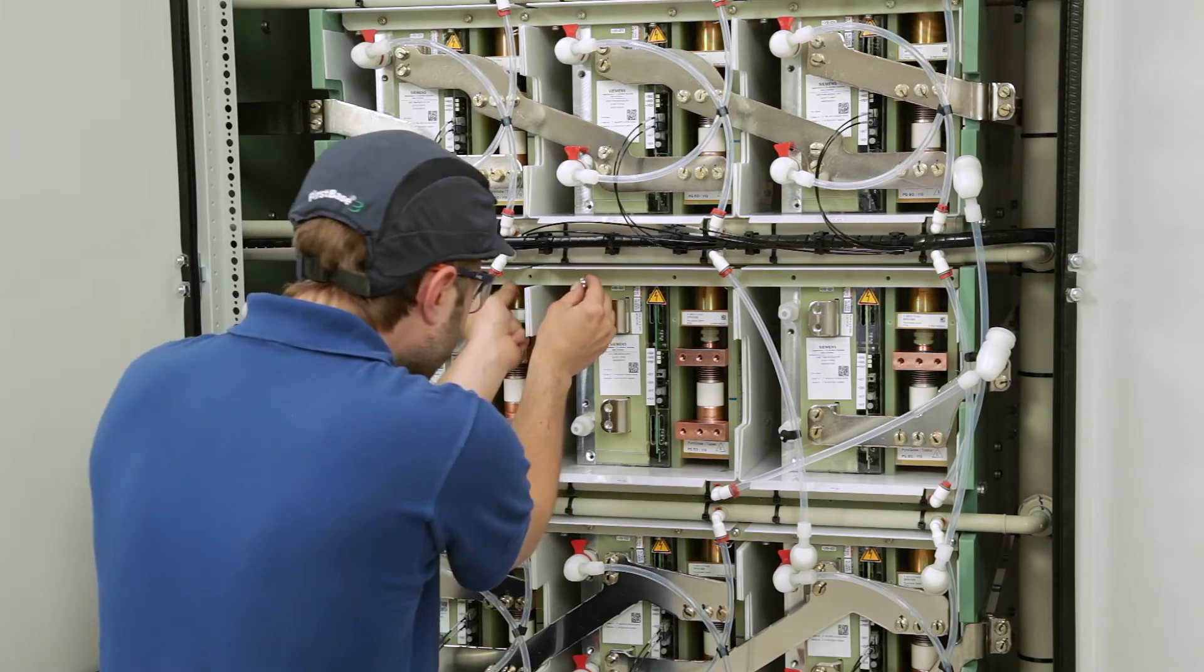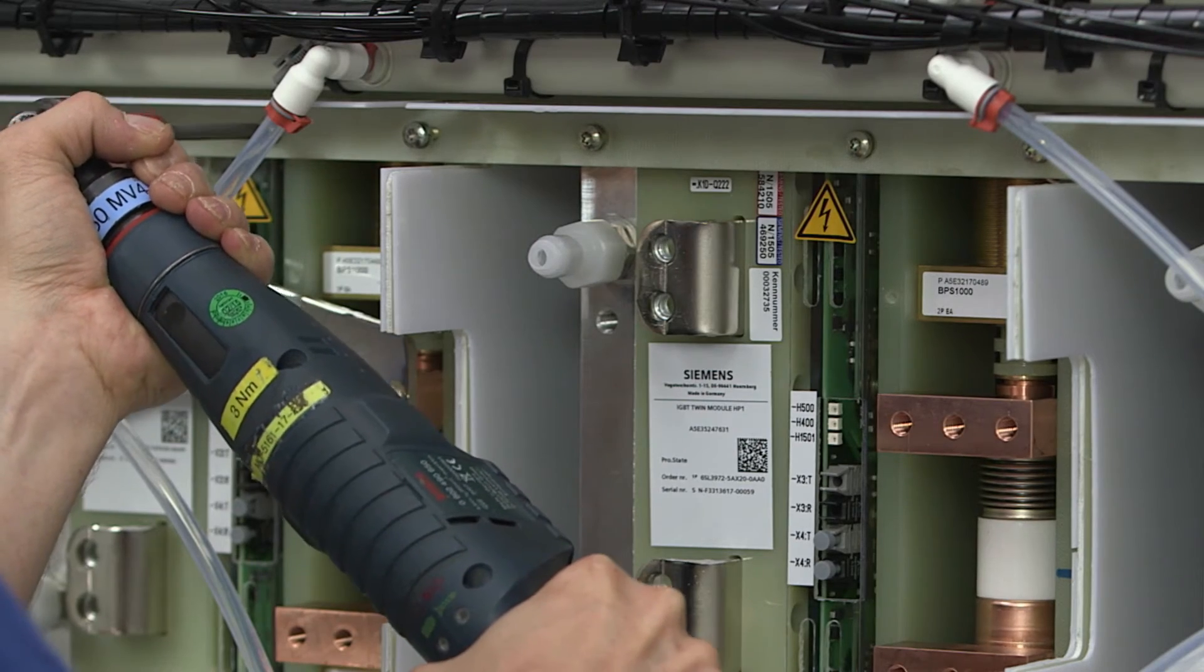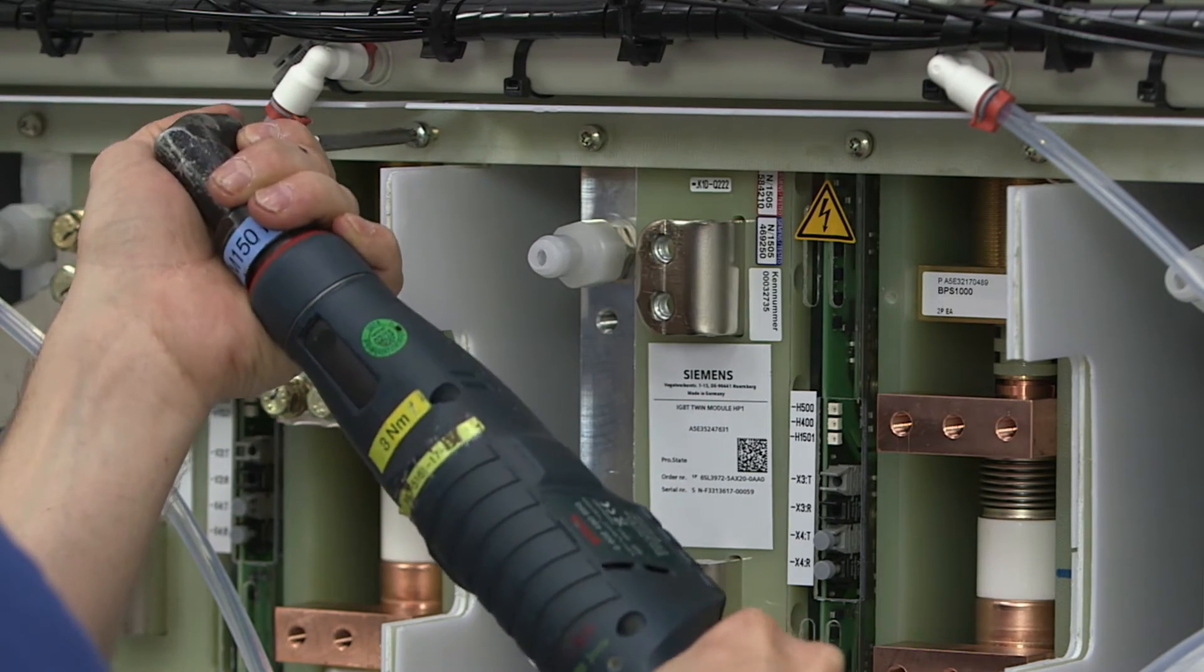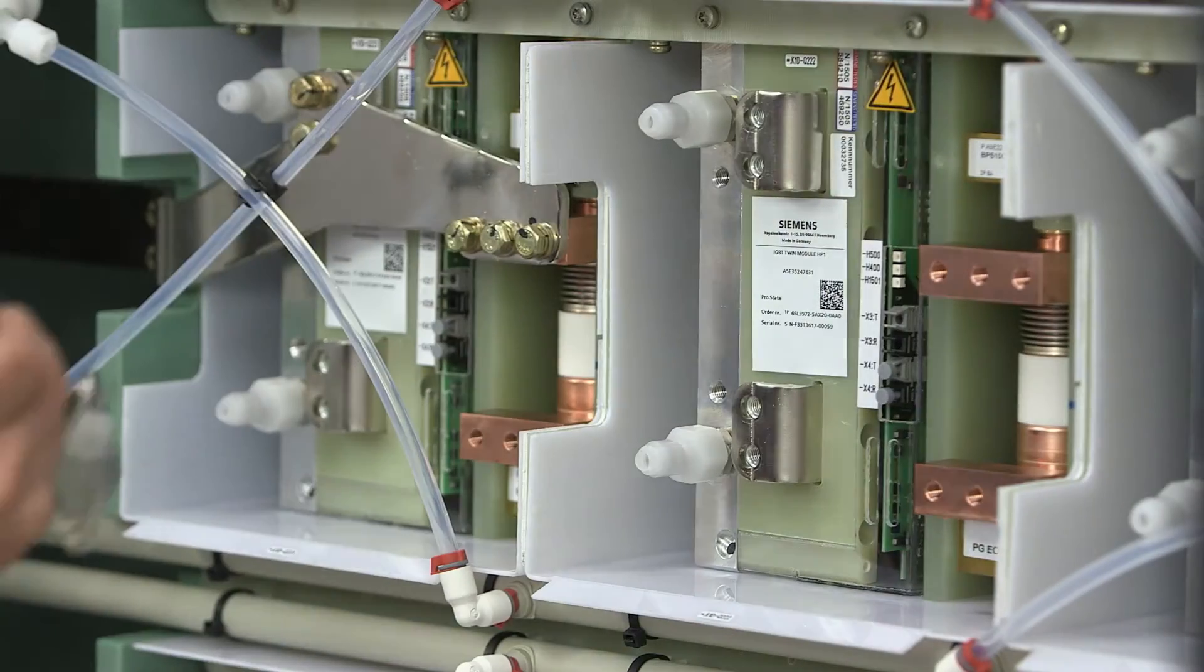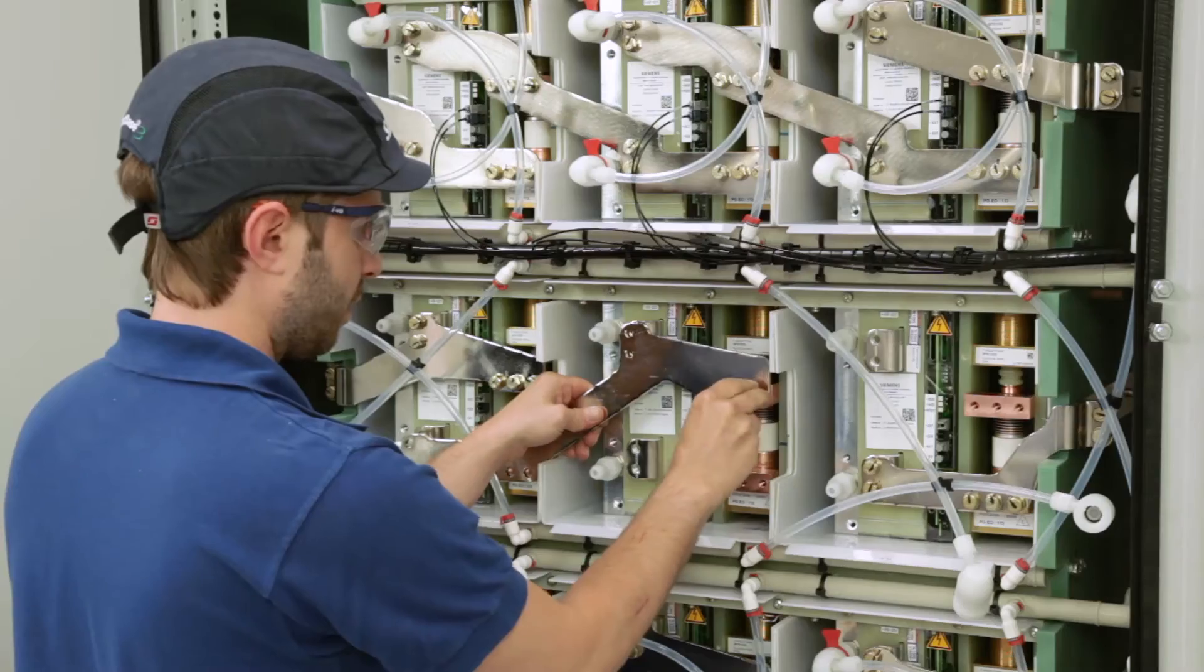Tighten all screws of the upper retaining strip. Then attach the bus bars and affix all screws to hold it in place.